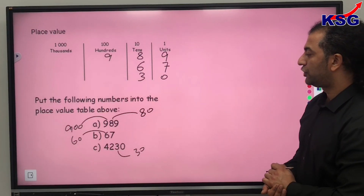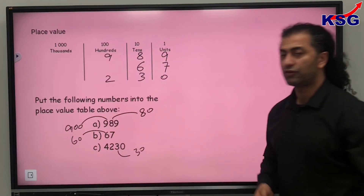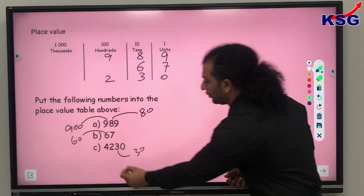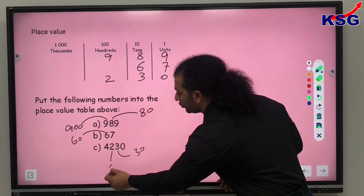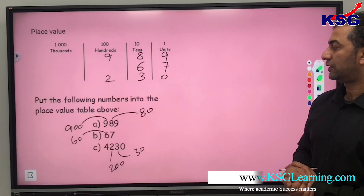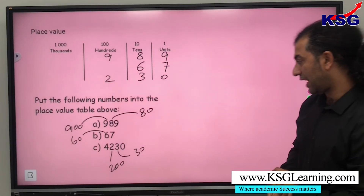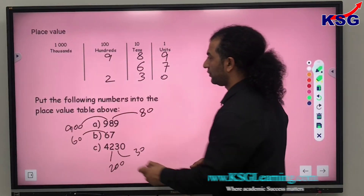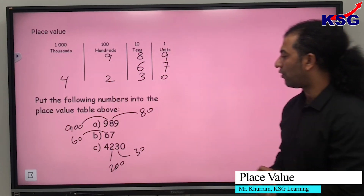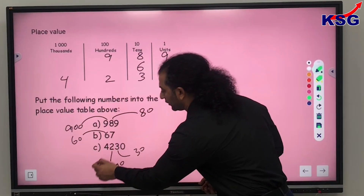2 represents hundreds value, so the value of 2 is 200. 4 represents thousands value, so the value of 4 is 4,000.